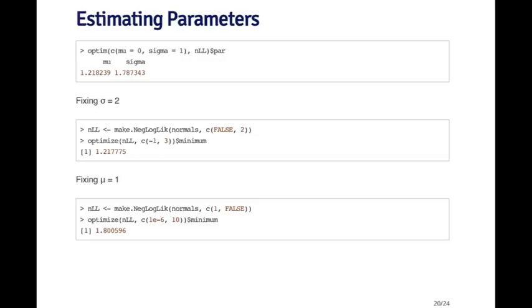I need to reconstruct my objective function by calling make.negloglike, and here I set the fixed variable to be false for mu and two for sigma — so I'm setting sigma to be equal to two and letting mu be free. Now I can just call optimize, because optimize will minimize a function of a single variable only. Because I only have a single variable in this function, I can use optimize, and you can see it estimates mu to be about 1.21 — slightly different from the previous optimization.